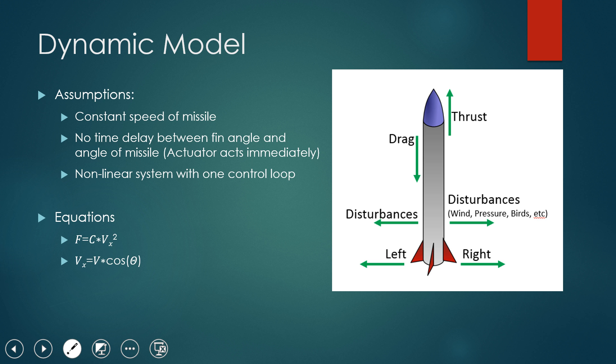So we've been working with a non-linear system, and we've been trying to get it with one control loop. And so to be able to do that, we've simplified the model a little bit to put most of the focus on the controller rather than on the equations. And so we've got a few simple equations. We're using the force equals a constant times velocity squared. And then we've also got an equation that solves for the velocity in the x direction.